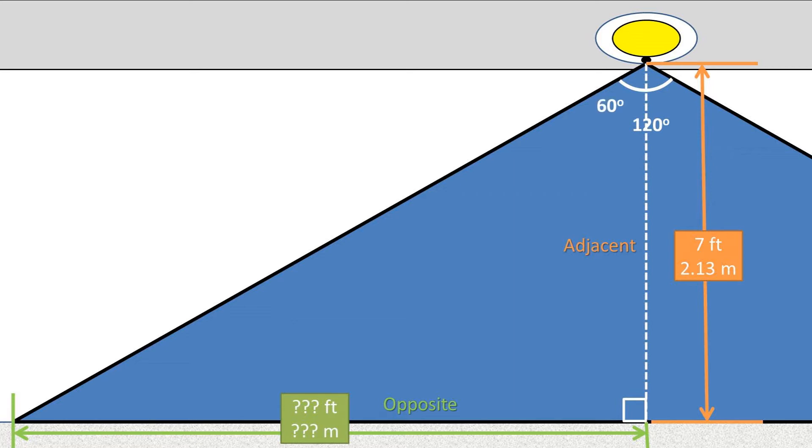We have a triangle that we can make a right triangle with an angle of 60 degrees up top, half of the 120 because we split it in half, and an adjacent side length, and we want to find the opposite side length.